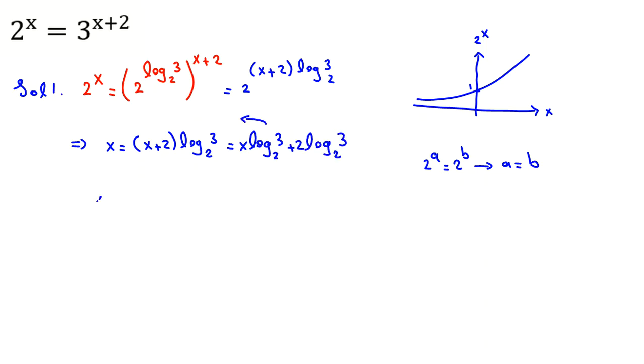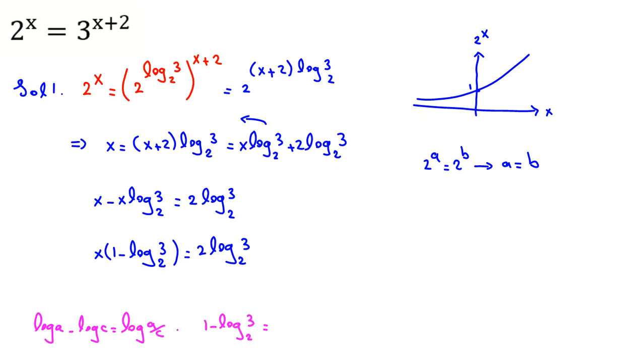When we take this to the left-hand side, it will be x minus x log base 2 of 3 equals 2 log base 2 of 3. We have a rule in logarithm that if we have log a minus log c, it is log a over c. Here it is 1 minus log base 2 of 3. It should have the same base. So instead of 1, I can write log base 2 of 2, which is 1 because 2 to the power of 1 is 2.